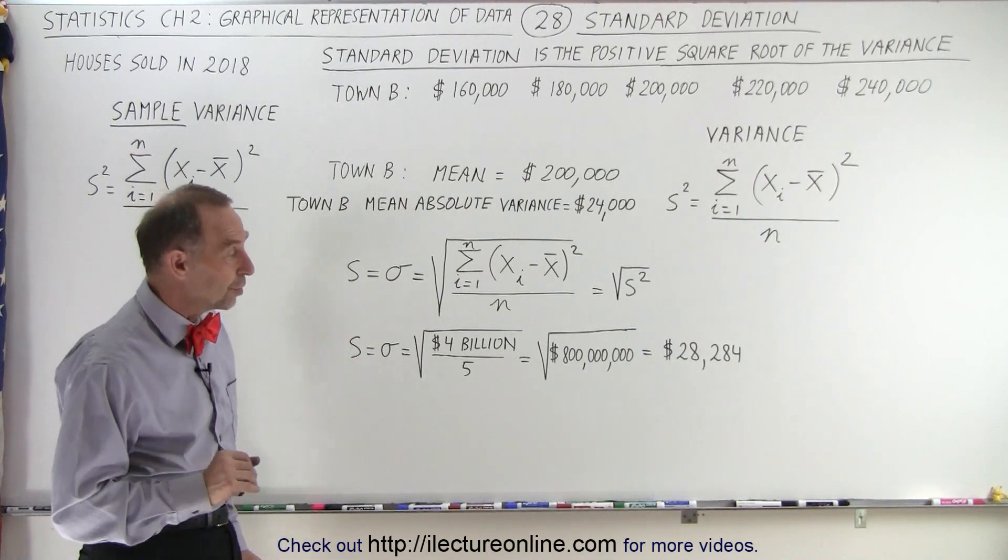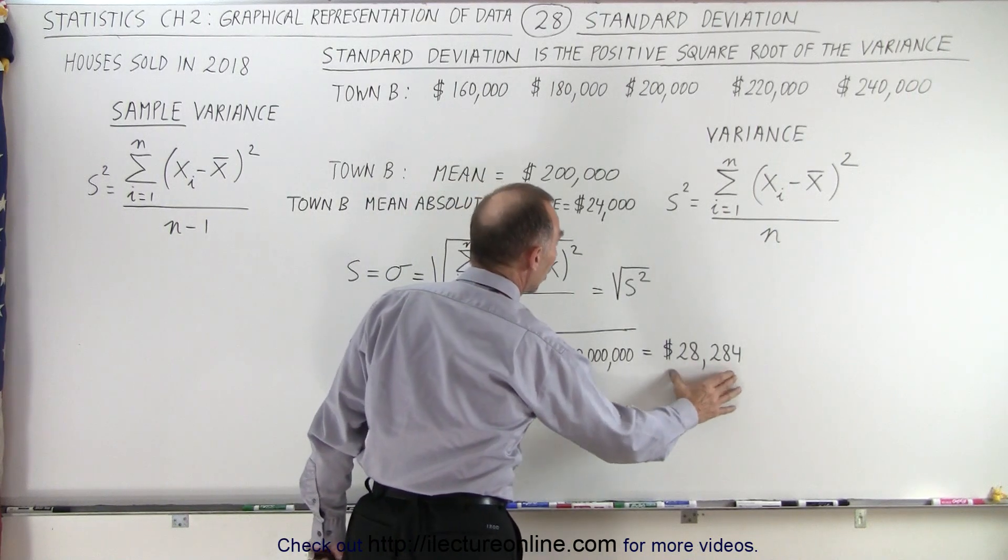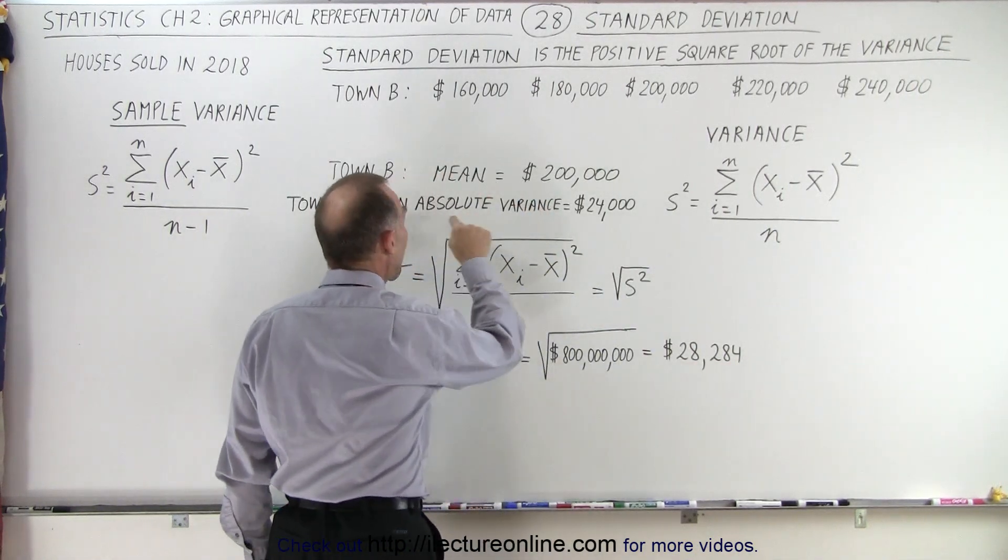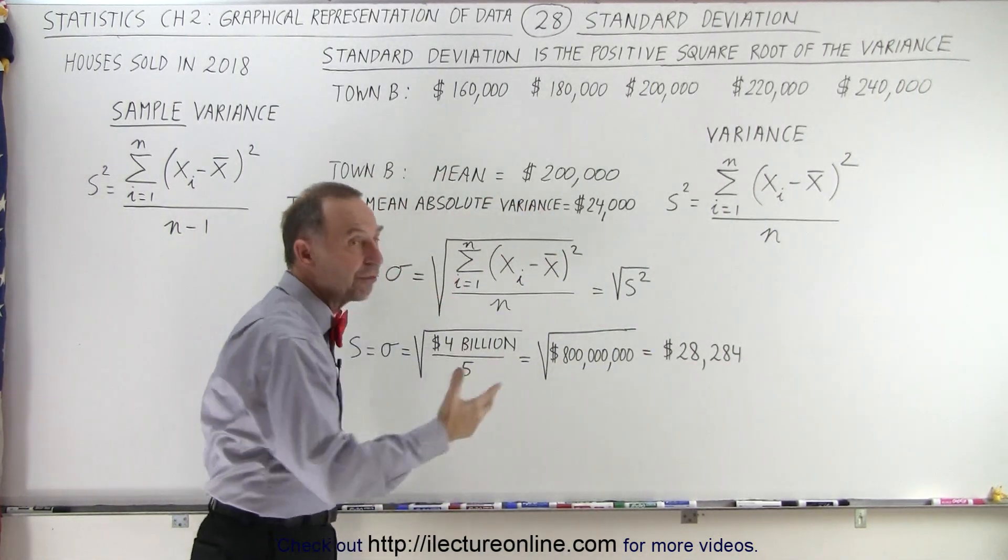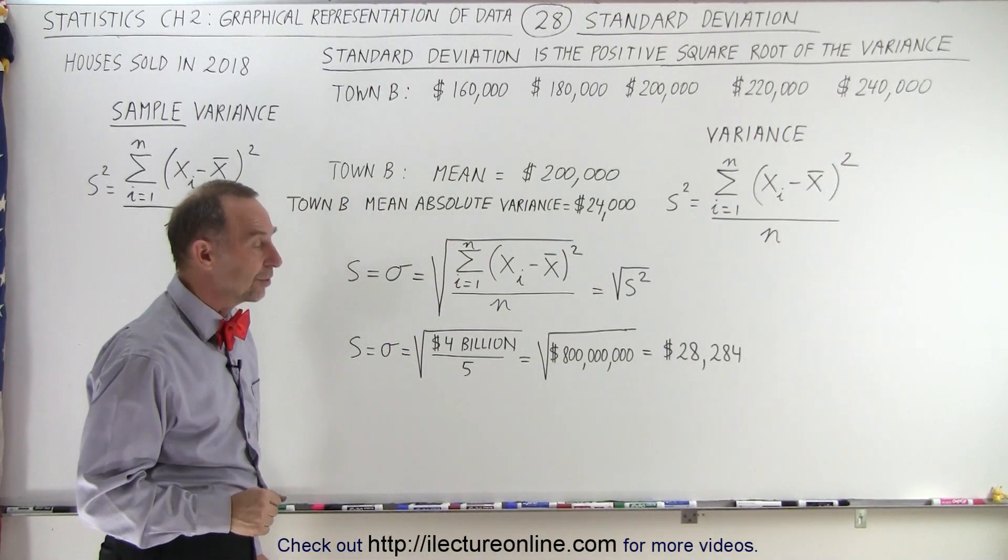We'll show you in the next videos how to do that, but note that the standard deviation is typically larger than the mean absolute variance, or the average difference between the average price and the actual price of the house.